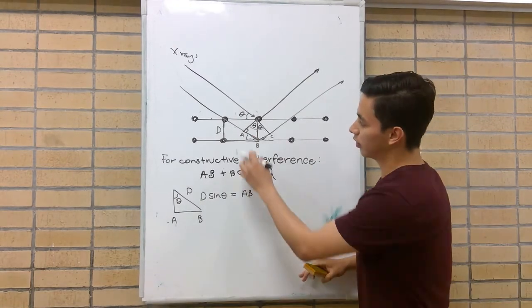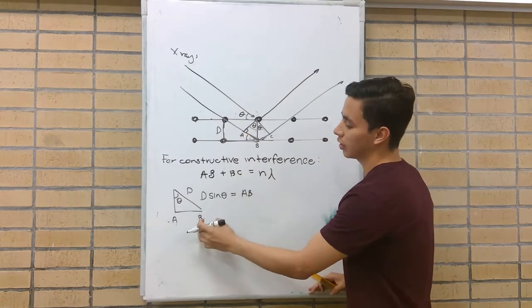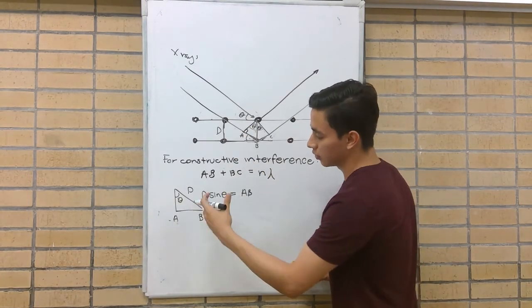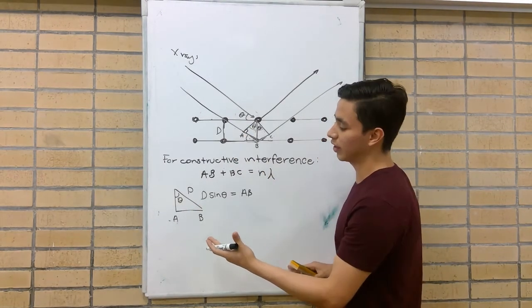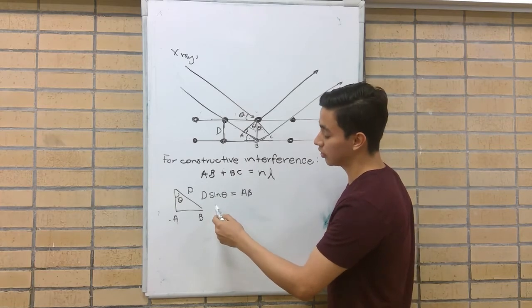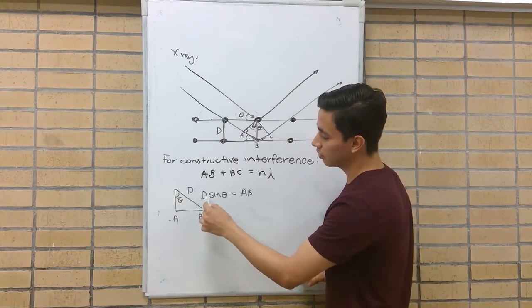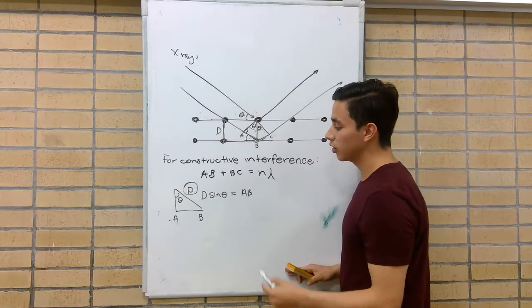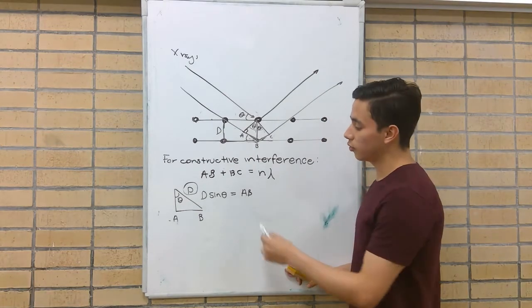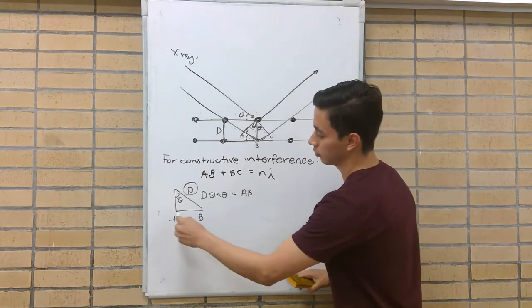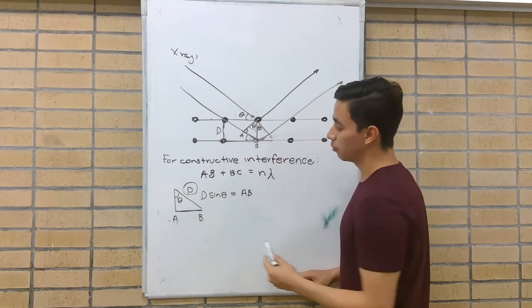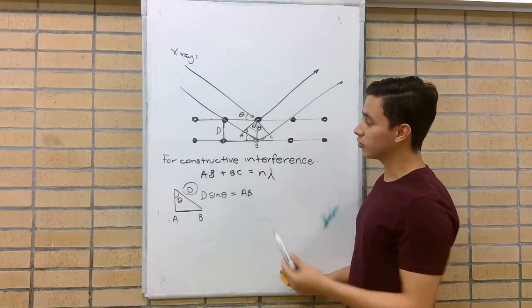Extracting this triangle and analyzing it, we can see that D, which is our hypotenuse, times sine of theta will be equal to AB.